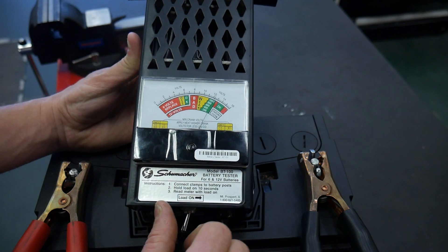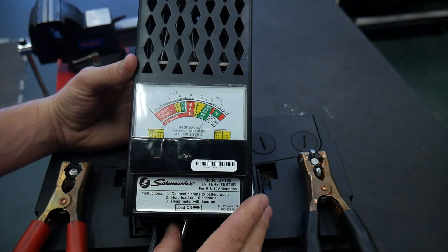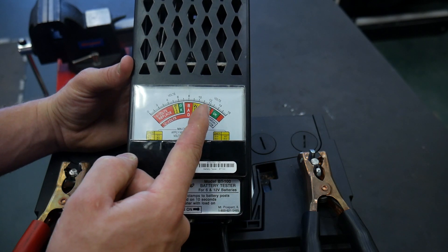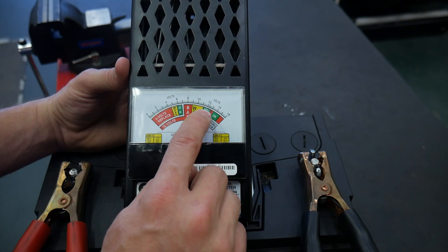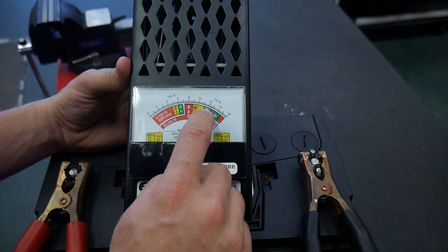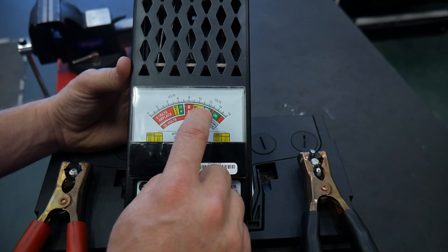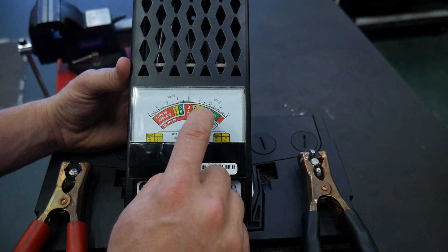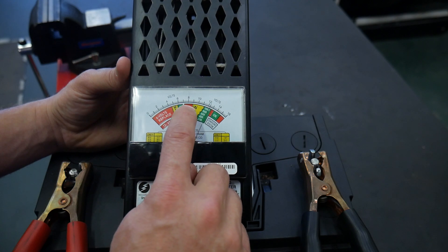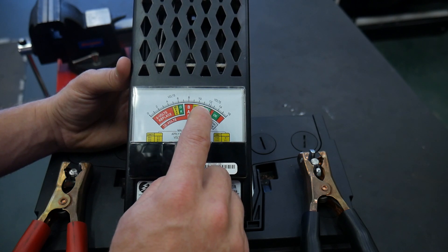There's a load switch on the bottom of this tester and you simply apply the load for 10 seconds and you read where it comes down. We're going to read the top scale right here because it's a thousand cold cranking amp battery and ultimately what we want to do is see that it doesn't drop into the red. It stays in the green ideally.